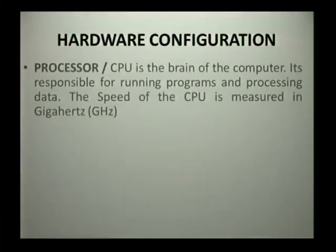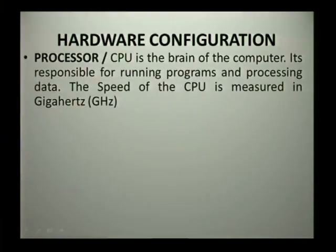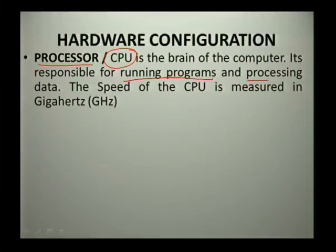The first one is your processor, which is mostly referred to as the CPU. The CPU is the brain of the computer and it's responsible for running programs and processing data. The CPU is basically measured in gigahertz in terms of its speed.